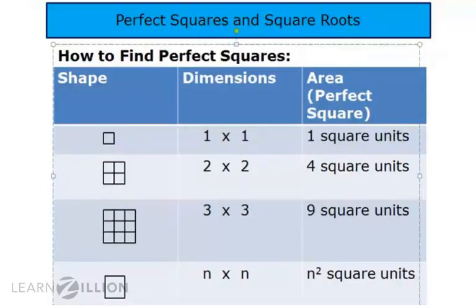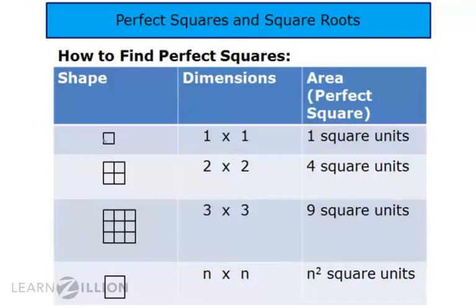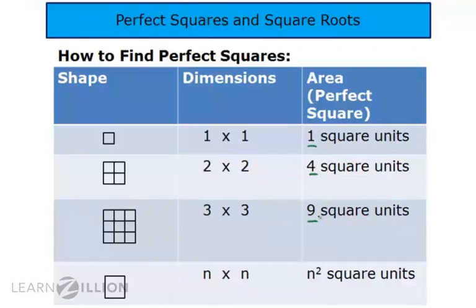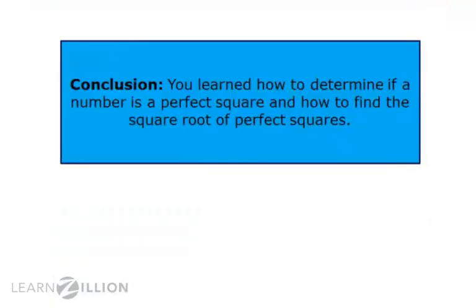It's important to be familiar with as many perfect squares as possible. Start with the smallest square possible: a one-by-one square creates a square that is one square unit, so one is your first perfect square. Then increase the side length by one each time. A two-by-two square creates four square units, so four is your next perfect square. A three-by-three square creates nine square units, so nine is your third perfect square. You can continue on like this forever: four-by-four gives sixteen, then twenty-five, and so on. You have just learned how to determine if a number is a perfect square and how to find the square root of perfect squares.